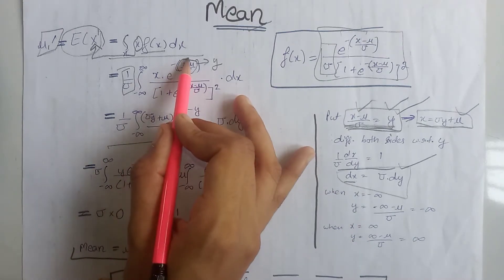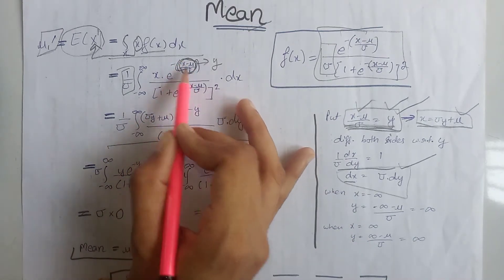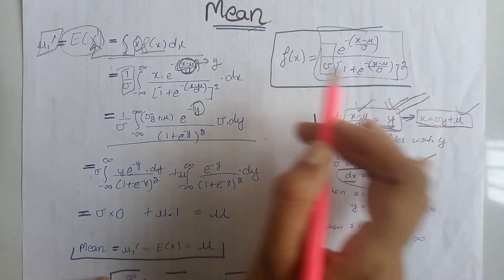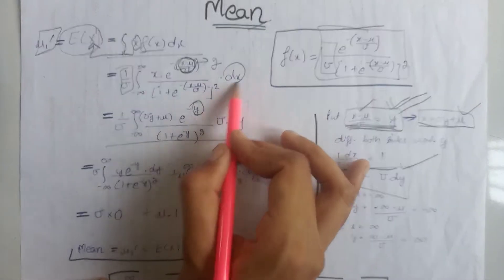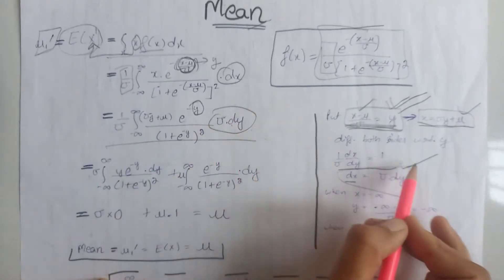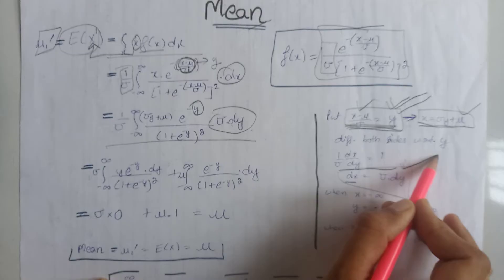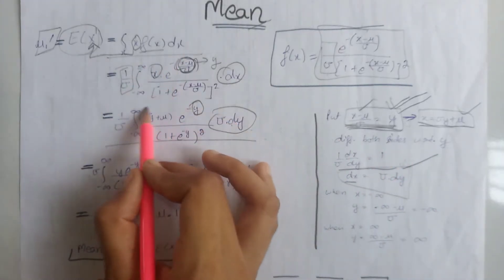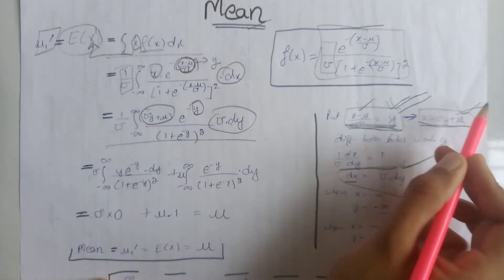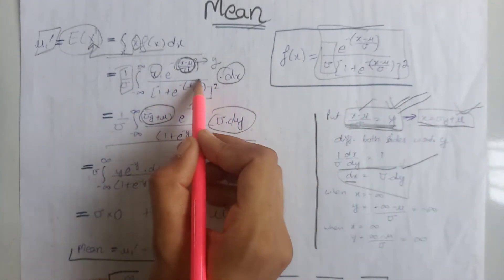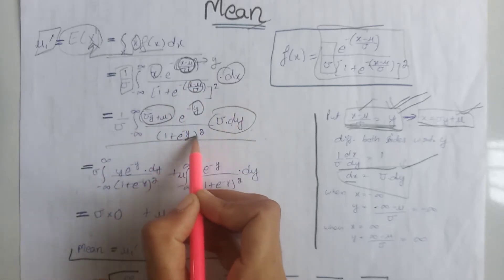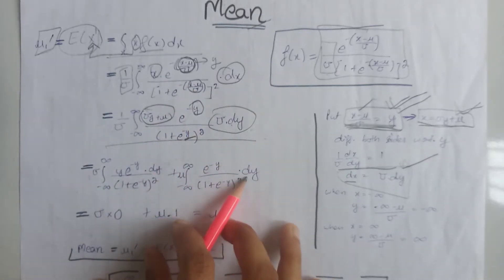At the place of this term, we write y because of this equation. At the place of dx, we write sigma multiplied by dy because of this equation. At the place of x, we write the corresponding value because of this equation. Similarly, at the place of this term, we write y again.